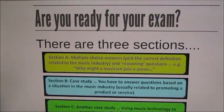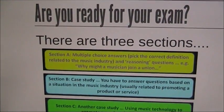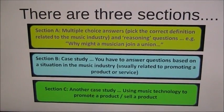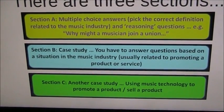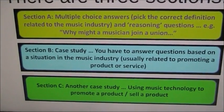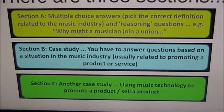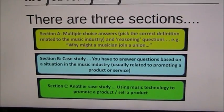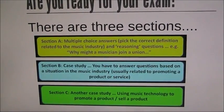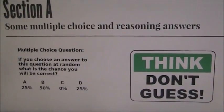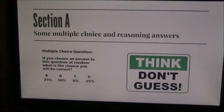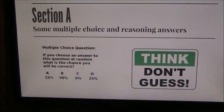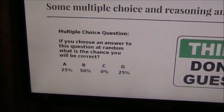There are three sections in the music exam. Section A is mainly multiple choice, identifying job roles, plus some reasoning questions where you have to identify job roles within the industry. Sections B and C are case study questions involving you answering questions based on a specific scenario. Remember that if you guessed the answers for the multiple choice parts of Section A, there's only a 25% chance you're going to get it right, so do make sure you've done your revision on the job roles.